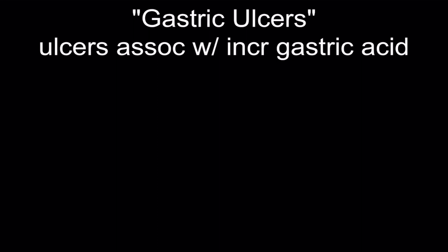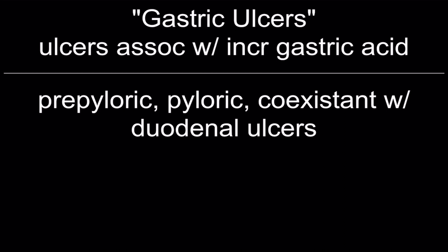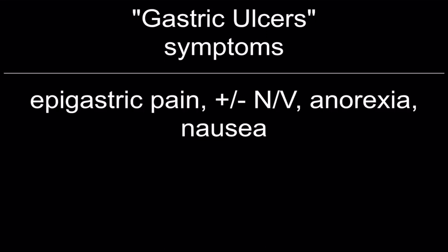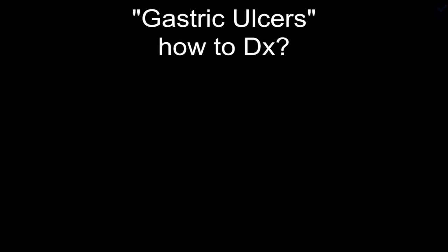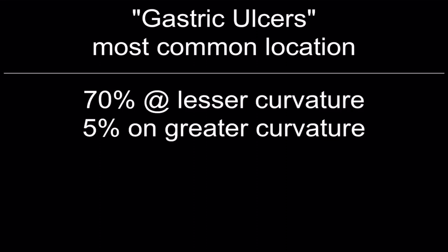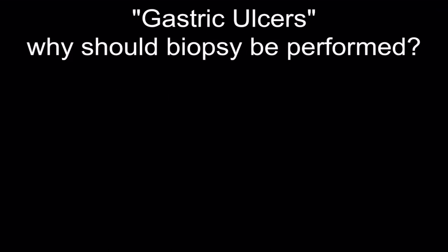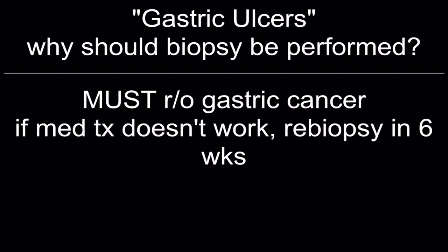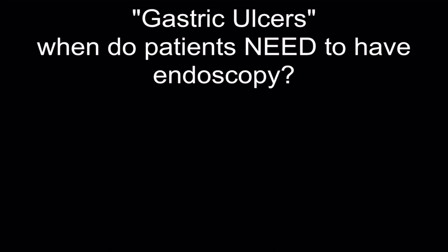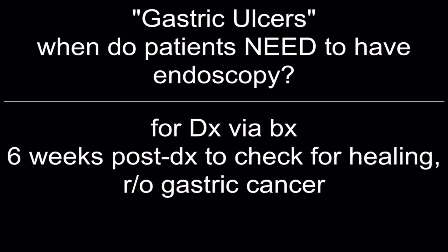Symptoms of gastric ulcers: epigastric pain plus or minus nausea, vomiting, and anorexia. Diagnosis: history, physical exam, endoscopy with biopsy looking for cancer. Most common location: 70% at lesser curvature, 5% on greater curvature. Biopsy must rule out gastric cancer; if medication doesn't work, re-biopsy in six weeks. Medical treatment: PPIs or H2 blockers. Endoscopy at six weeks post-diagnosis to check for healing and rule out gastric cancer.